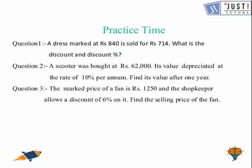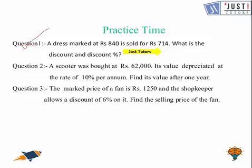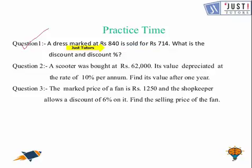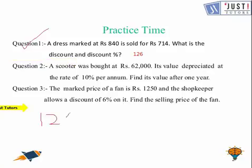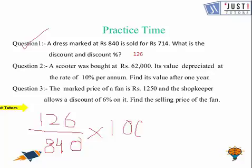Now let's move to the practice question. A dress marked at Rs. 840 is sold for Rs. 714. We need to find the discount and discount percent. Discount = Rs. 840 − Rs. 714 = Rs. 126. For discount percent: 126 divided by 840, multiplied by 100, gives us 15%. So the discount percent is 15%.